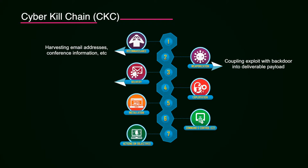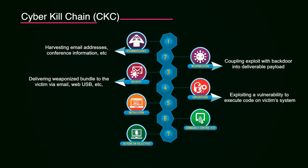The third phase is the delivery — the attacker devises a method to deliver it to the target by using an email, web, or USB, or by convincing the target to click on something. That exploit with the backdoor is delivered to the victim in this phase, followed by the exploitation phase, where the exploit exploits a vulnerability to execute code on victim systems and infrastructure. That then moves to installing malware on the target.